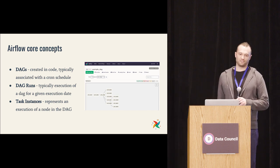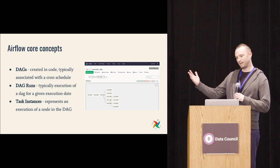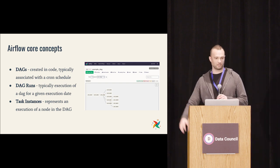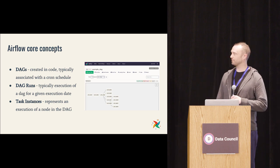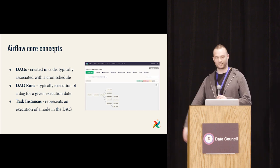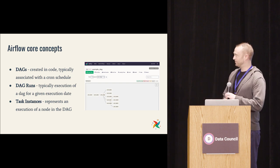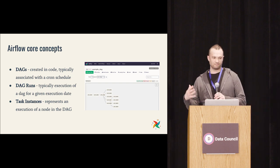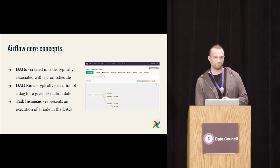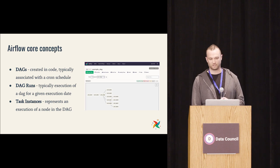A DAG run is an instance of that DAG running in time. Typically these DAGs are scheduled on a cron-tab syntax — every night at midnight, every hour, that kind of thing. A task instance is just an execution of one of those nodes in the graph during a DAG run. Those are the core concepts of Airflow.